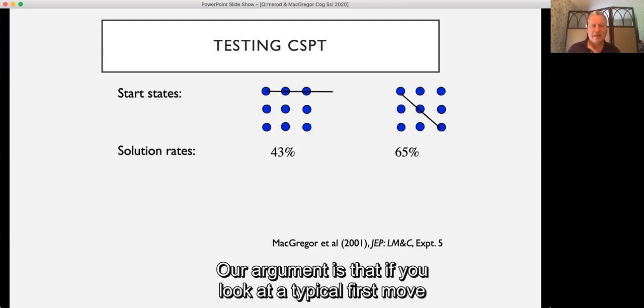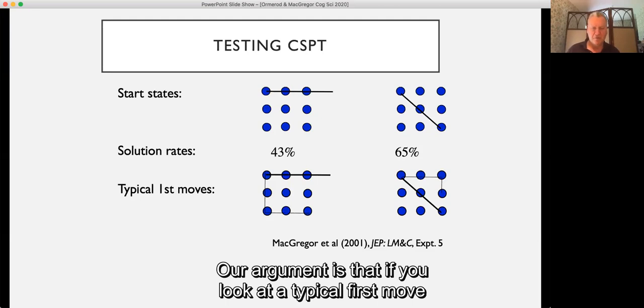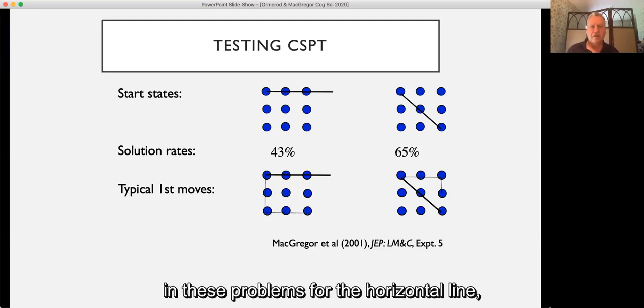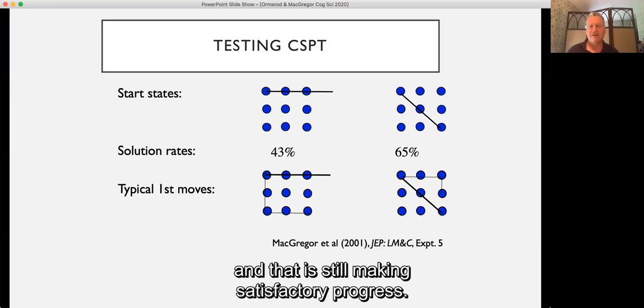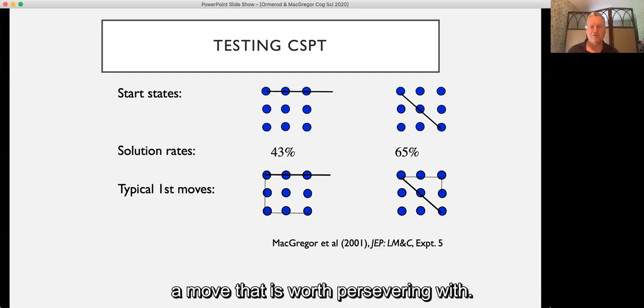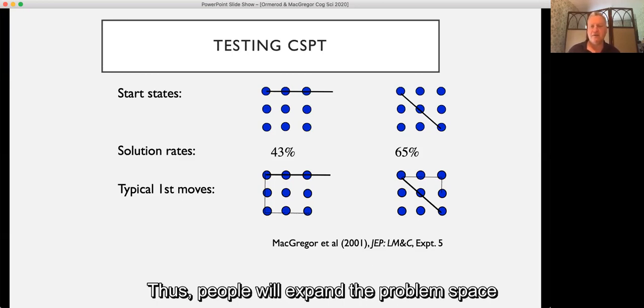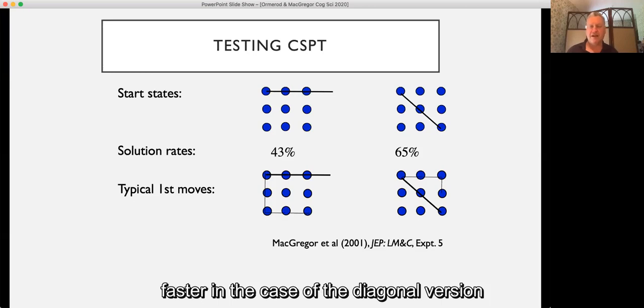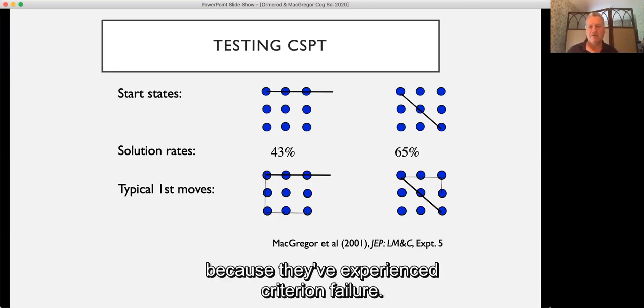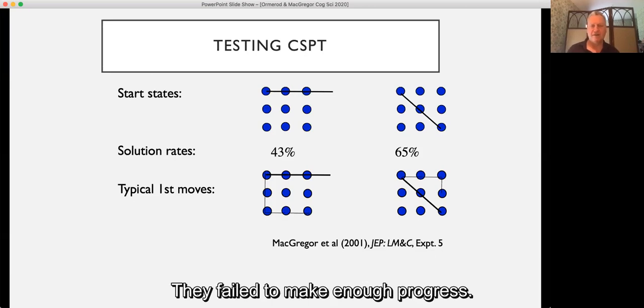Our argument is that if you look at a typical first move in these problems, for the horizontal line you see that the first move will cancel seven out of the nine dots, and that is still making satisfactory progress, so it seems like a move that is worth persevering with. Whereas almost immediately your attempts with the diagonal line fail to cancel as many dots as you need to maintain satisfactory progress. In this case they only cancel six out of nine dots. Thus people will expand the problem space faster in the case of the diagonal version than in the horizontal version because they've experienced criterion failure. They failed to make enough progress.